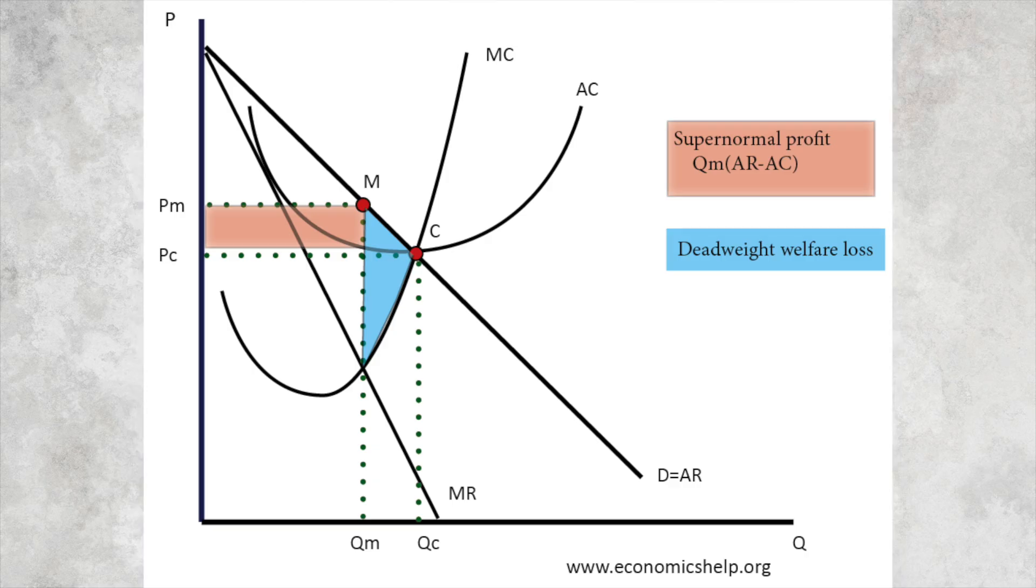Firstly, with regard to allocative efficiency, a monopoly is inefficient because the price, PM, is significantly greater than the marginal cost. That is under-consumption. Society is not benefiting from the full value that you could have in a competitive market. Secondly, it is productively inefficient because it's not quite the lowest point on the AC curve, hardly visible on this particular diagram. But to be fully productively efficient will be at point C.